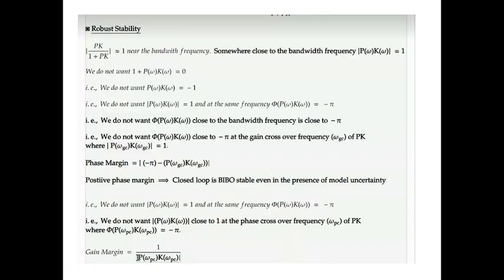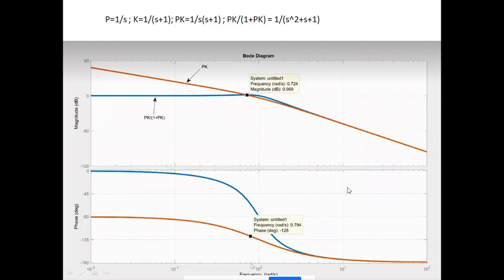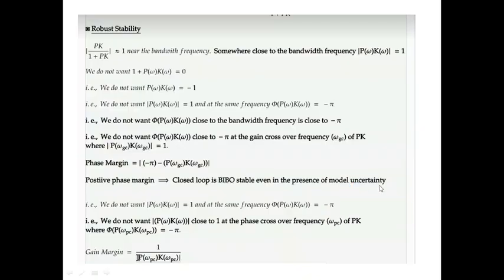A positive phase margin is desired, and that would mean that the loop is BIBO stable even if there's uncertainty in the model. Here what we mean is that since the behavior of the plant is not exactly known—it is just a model—an uncertainty should not result in the plant becoming BIBO unstable. A positive gain margin usually greater than 44 degrees is desired.